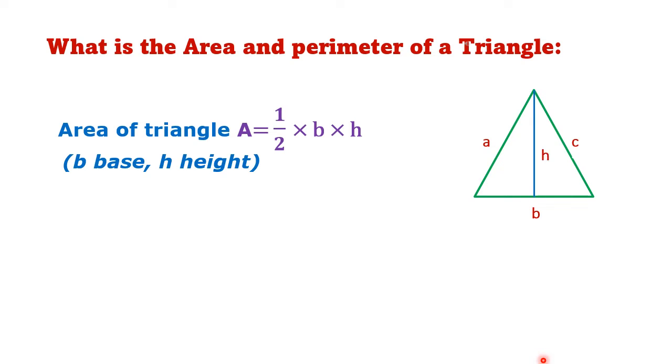What is the area and perimeter of a triangle? Area of triangle A equals half times B times H, where B is the base and H is the height.